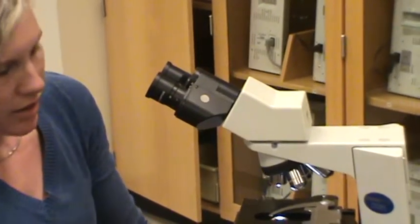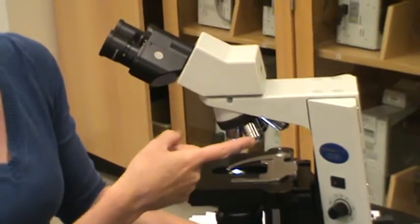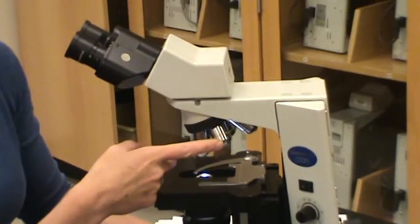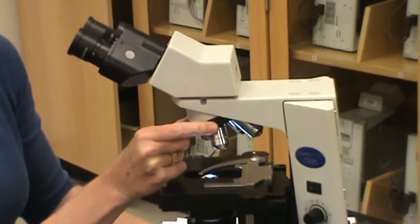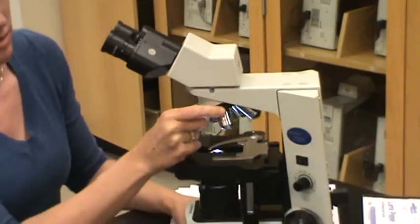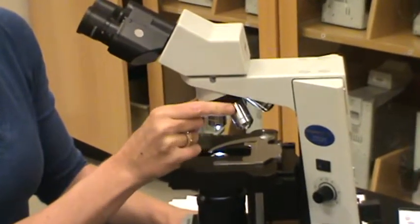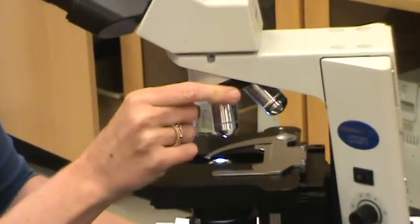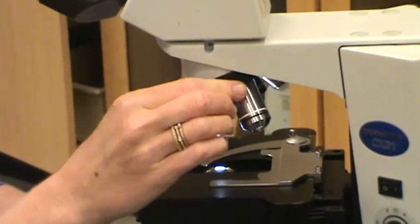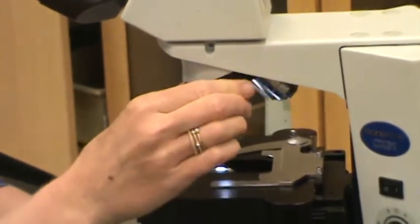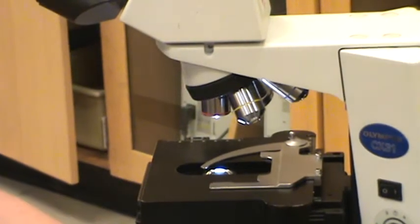The second set of lenses are found here. They are affixed to a piece of the scope called the rotating nose piece, and this piece of the scope allows you to literally rotate or spin the objectives around and lets you use one objective at a time.